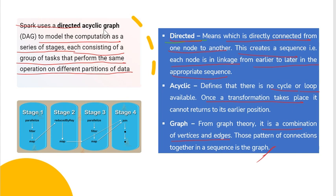So directed means it is directly connected. Acyclic means it's not a loop or a cycle because it will not return to its earlier position. And graph means it uses graph theory, the combination of vertices and edges, and the pattern of connection together in the sequence is the graph actually. You can see here such type of graph is created by the DAG.